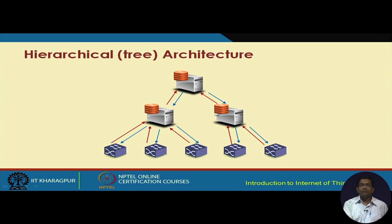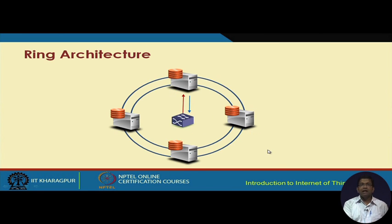Then we have the ring architecture. In the ring architecture, multiple controllers are placed in a ring-like fashion, but a particular switch is connected to only one controller. When a packet-in request has to be sent, it will be sent to that single controller only — not to any of the other controllers in the ring — and the flow rule is sent back to the switch that requested it.